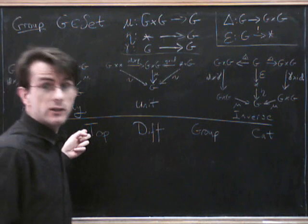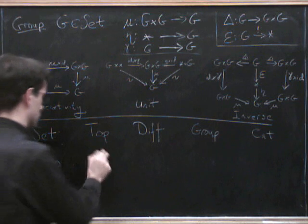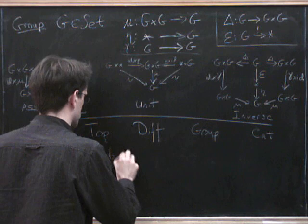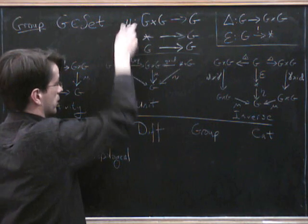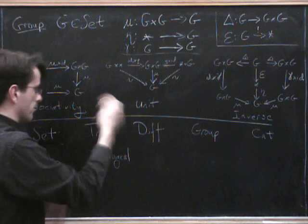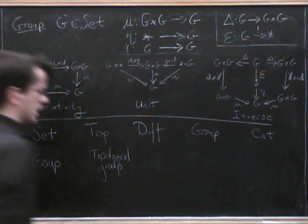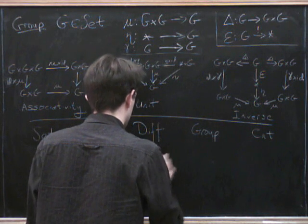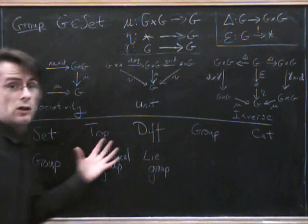A group object in topological spaces just comes down to a topological group. So it's just a topological space with a product, and an inverse, and a unit, such that all the morphisms are continuous. So it's a topological group. Do the same thing in the category of manifolds, we get a Lie group. So that's sort of the obvious one.